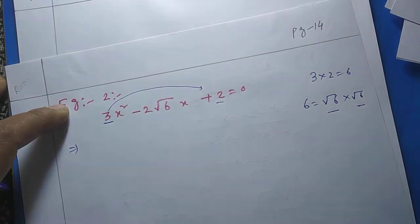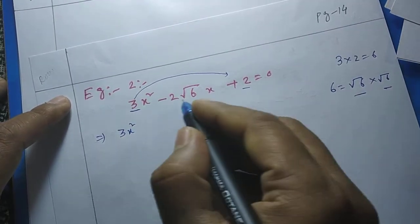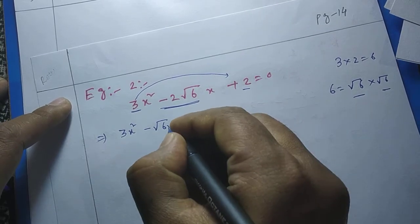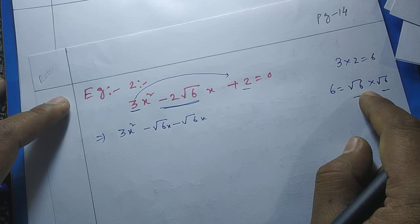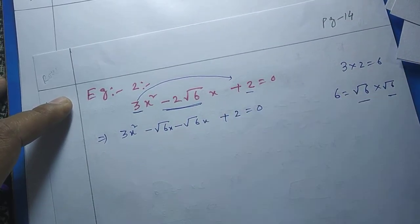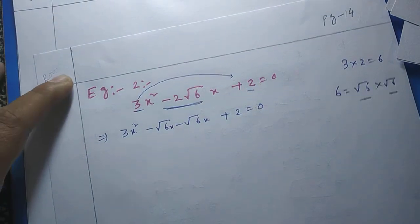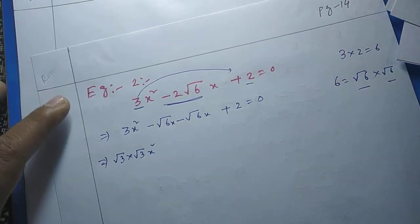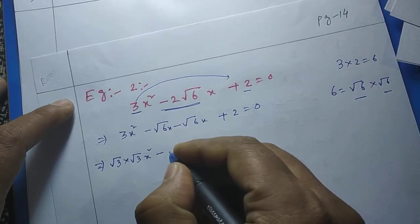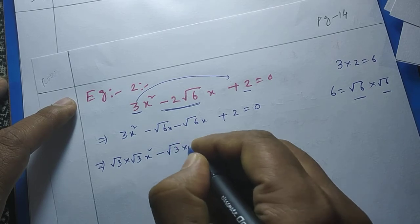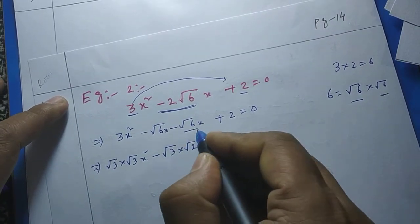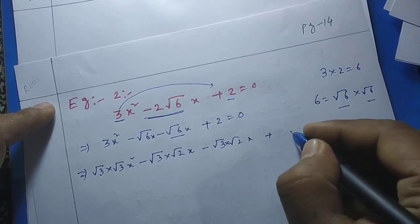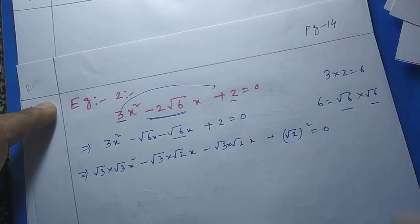Now let us rewrite the equation. The term 3x² can be written as (√3 x)², and the middle term −2√6 x can be rewritten as −√6 x − √6 x, where √6 = √3 × √2. So the equation becomes (√3)²x² − √3·√2·x − √3·√2·x + (√2)² = 0, where the constant 2 is written as (√2)².